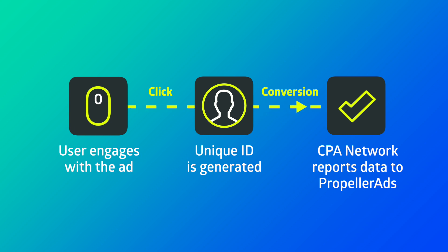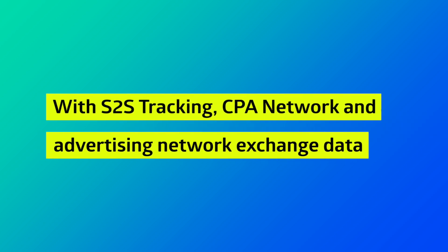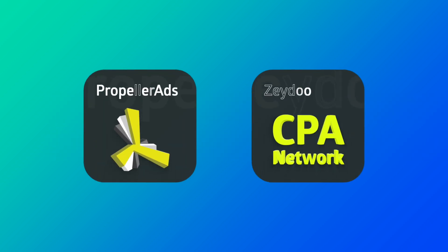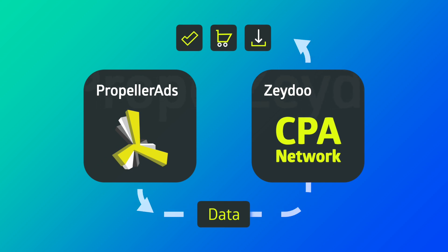This way, Propeller's statistics become exceptionally accurate and meaningful. You can see the data about all events happening with each of your offers. Propeller Ads SSP will identify each offer correctly since every click ID is unique. So, to put it simply, with S2S tracking, the CPA network and advertising network exchange data, allowing the advertising network to form statistics so you stay aware of all actions users perform with your offers — namely, conversions and impressions.